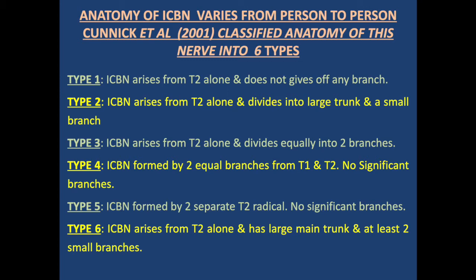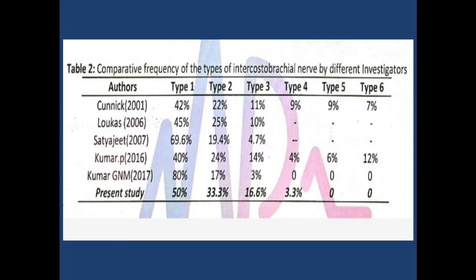The anatomy of the intercostal brachial nerve varies from person to person. Kunig et al. in 2001 classified the anatomy into six types. Type 1: arises from T2 alone with no branches, moving directly to the arm. Type 2: arises from T2 alone, divides into a large trunk and small branches. Type 3: arises from T2 alone and divides equally into two branches. Type 4: formed by two equal branches from T1 and T2. Type 5: two separate T2 radicals with no significant branches. Type 6: arises from T2 alone with a large main trunk and at least two small branches.